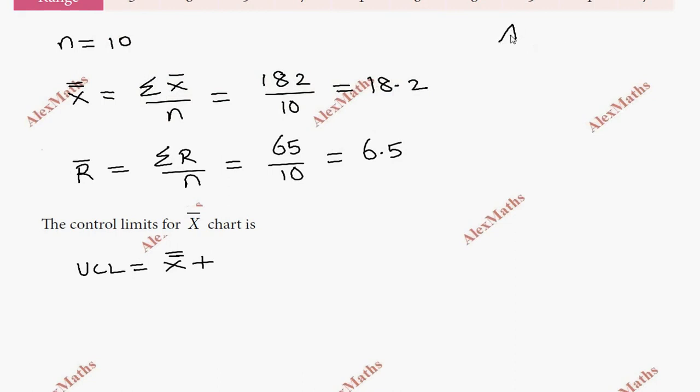X double bar is 18.2 plus 0.577 times 6.5. So X double bar is 18.2 plus 3.75005, which equals 21.9505.